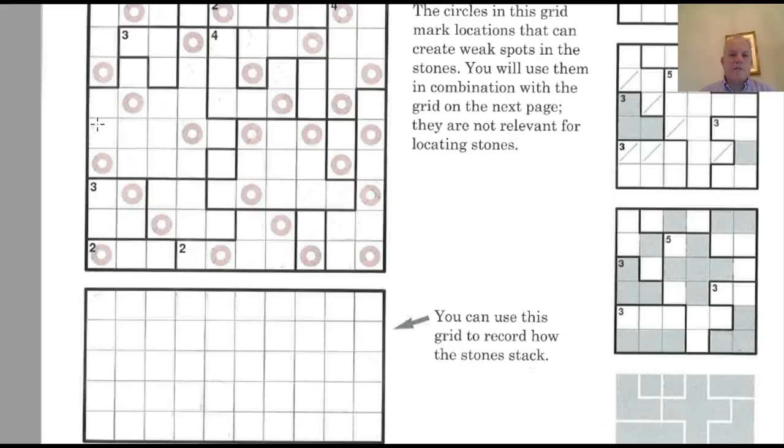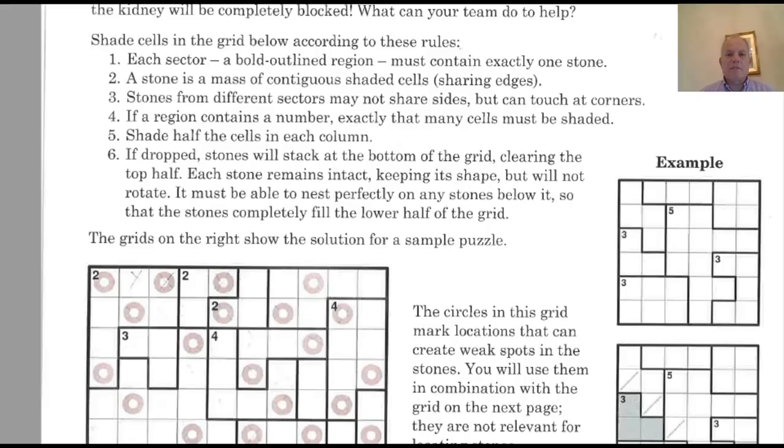So you could either see that as the bottom half of this grid, or more usefully, as this other grid. The circles in the grid provided mark locations that can create weak spots in the stones. You'll use them in combination with the grid on the next page. They're not relevant for locating stones. So they're not part of this puzzle. So let's just check these rules again.